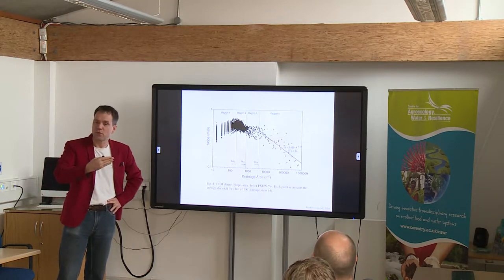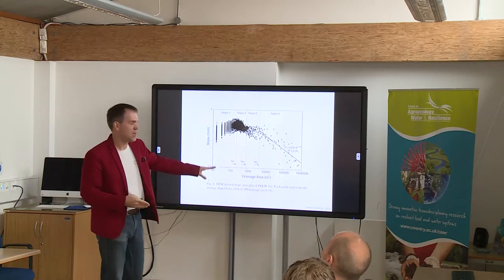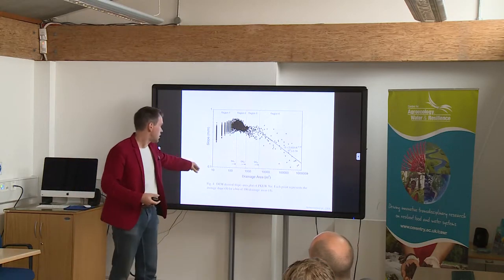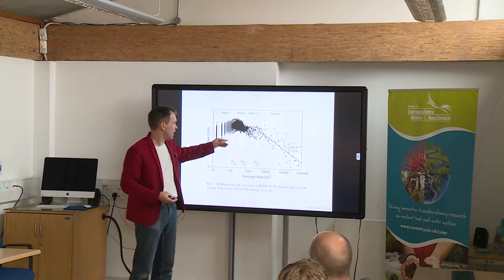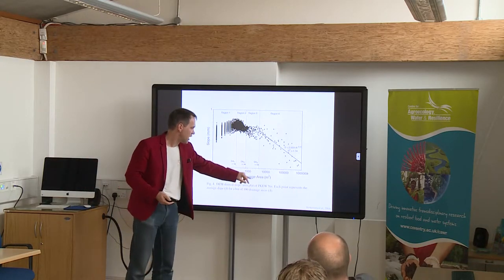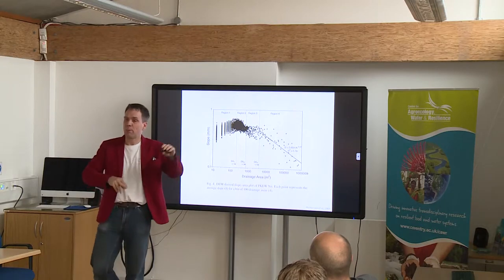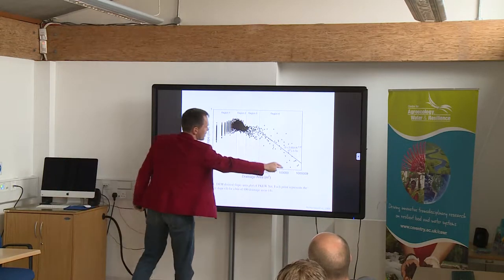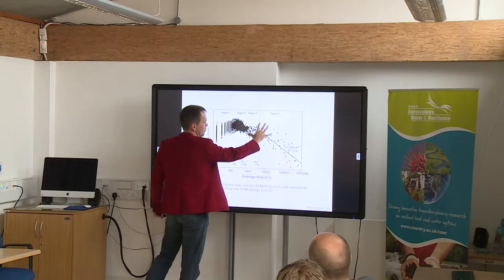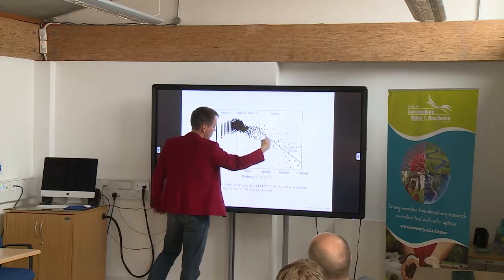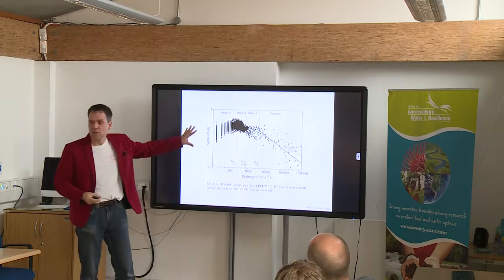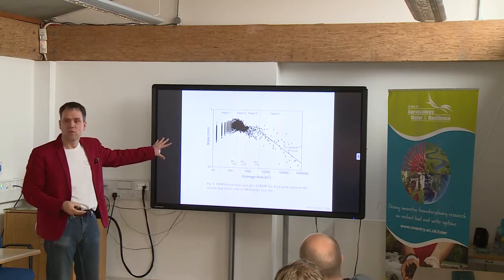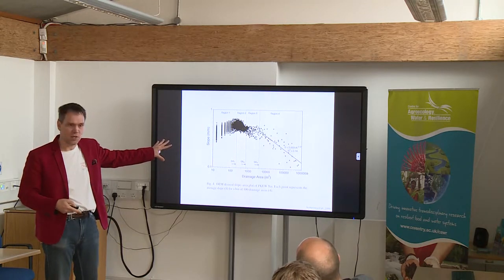That is process modelling — trying to replicate and simulate those processes. That is different from statistical modelling. Basically somebody measured a large amount of drainage areas and slopes, plotted them against each other, and you can do some sort of regression to see the relationship. This is not the type of modelling I am talking about in this presentation — I am talking about simulation.